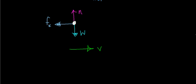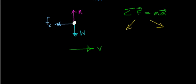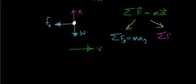Now we apply Newton's second law. In vector form, the sum of all forces equals the mass of the object times its acceleration. Since forces act in two directions, we write two separate equations: the sum of forces in the y-direction equals mass times acceleration in the y-direction, and the sum of forces in the x-direction equals mass times acceleration in the x-direction.